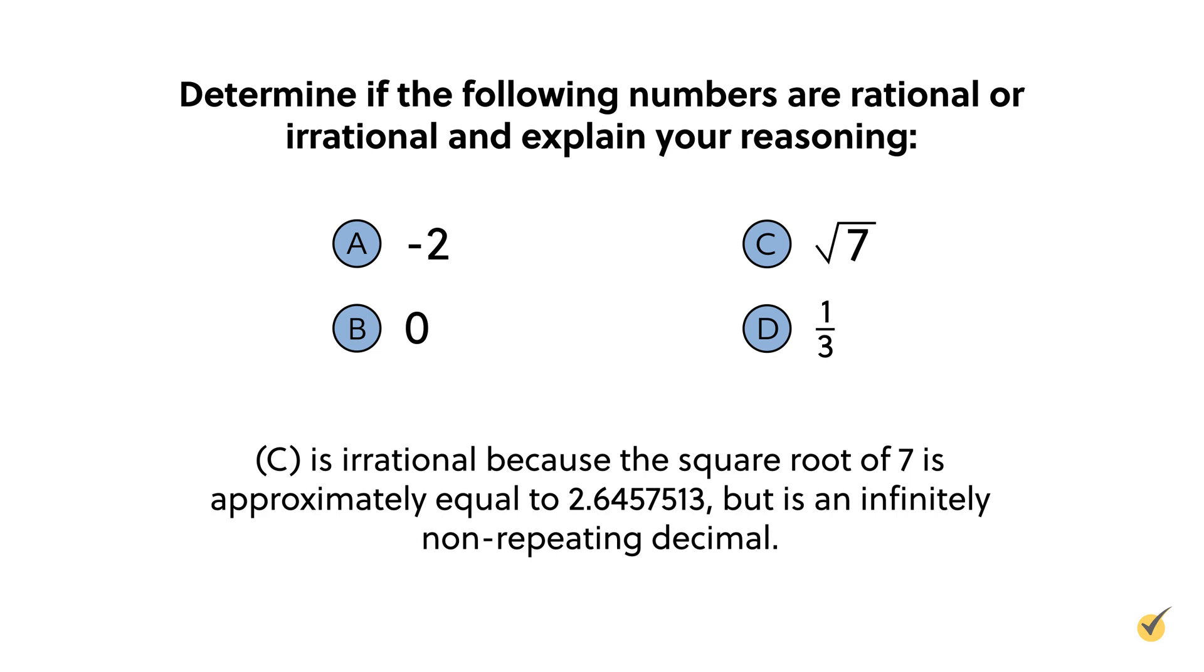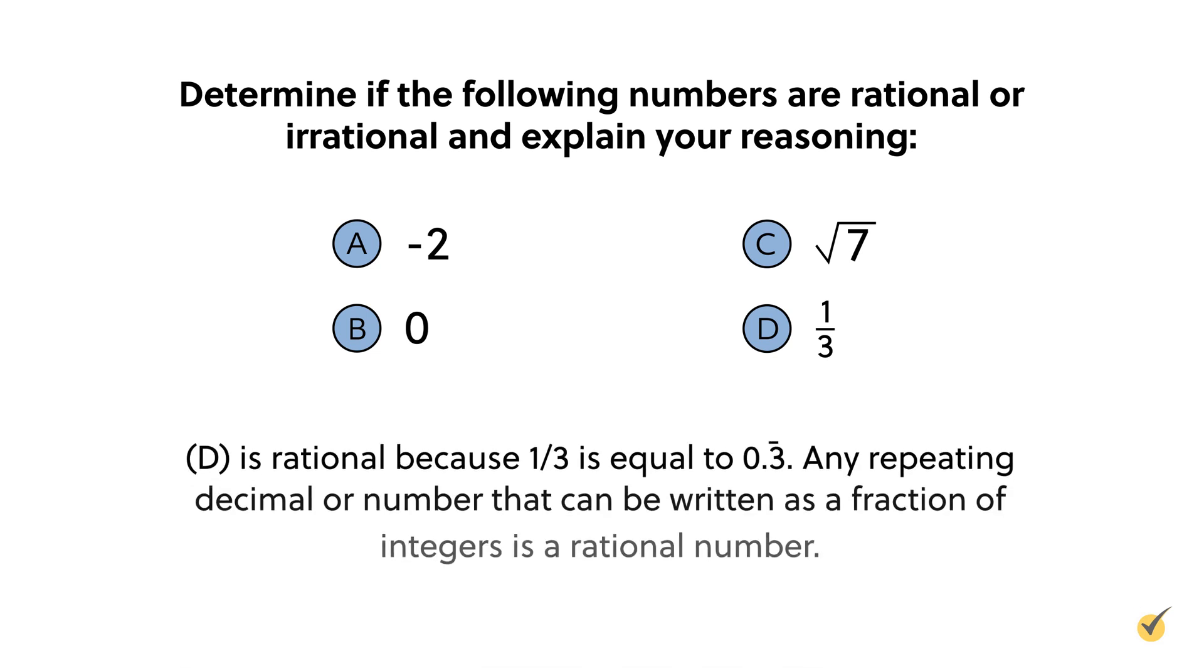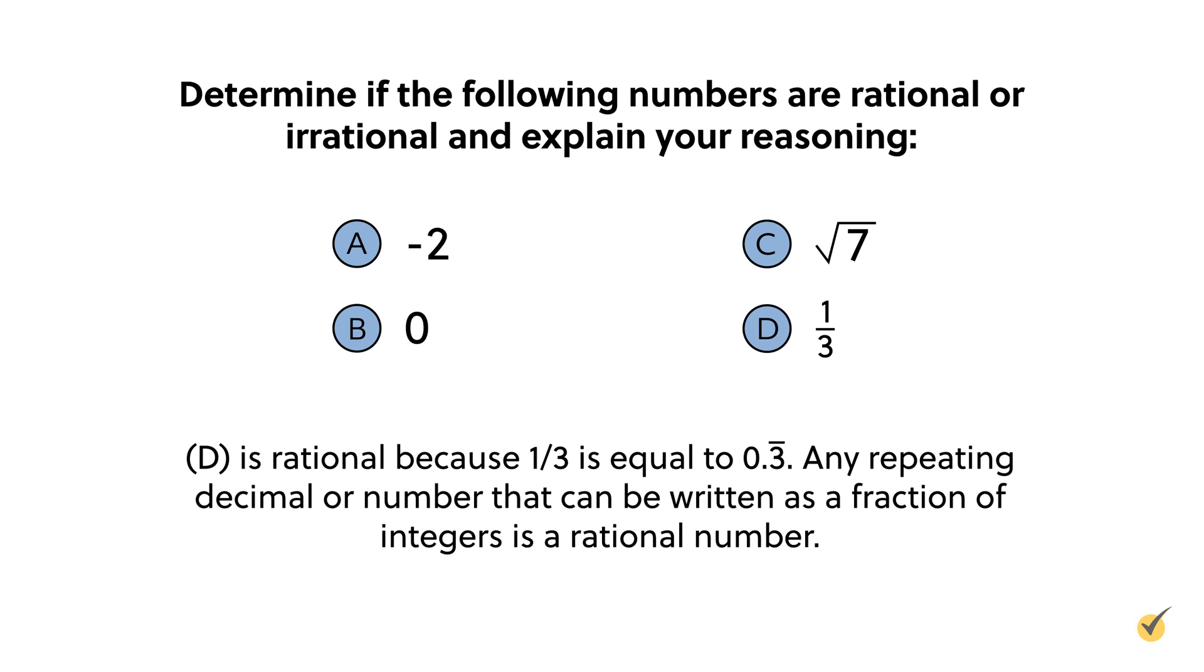C is irrational because the square root of 7 is approximately equal to 2.6457513, but this is an infinitely non-repeating decimal. And D is rational because 1 over 3 is equal to 0.3 repeating. And any repeating decimal or number that can be written as a fraction of integers is a rational number.